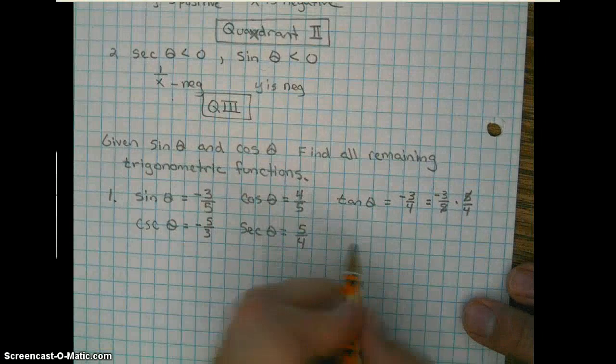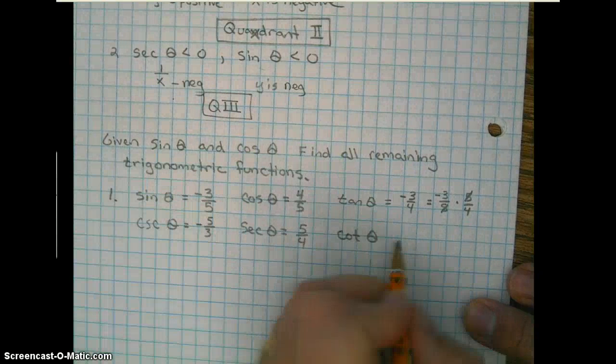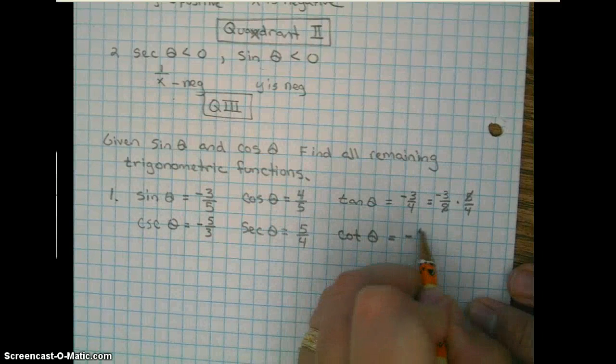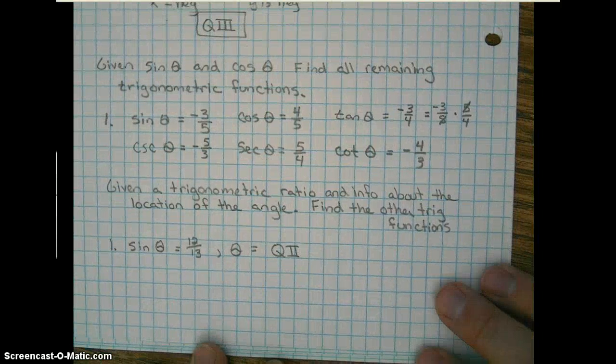So then cotangent is easy. Cotangent is the reciprocal function of tangent, so we have negative 4 thirds. Okay, next topic.